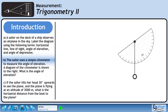Now we'll move on to part B. The sailor uses a simple clinometer to measure the angle of elevation. A diagram with a clinometer is shown to the right. What is the angle of elevation?